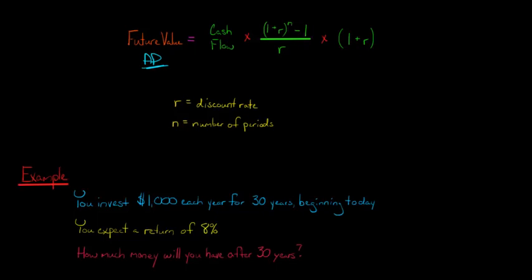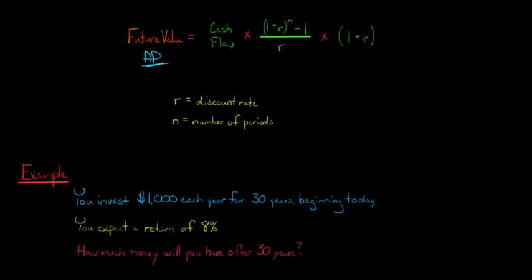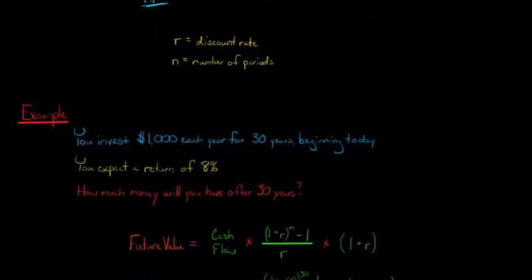Now, you're expecting to earn a return of 8%. So that'll be your discount rate, that'll be the R that we use in this formula up here. And so you're wondering, after these 30 years are up, how much money will I have in the bank account? How much money will I have saved? And we can use this formula for future value of an annuity due to figure that out because we're trying to figure out the future balance of your account.